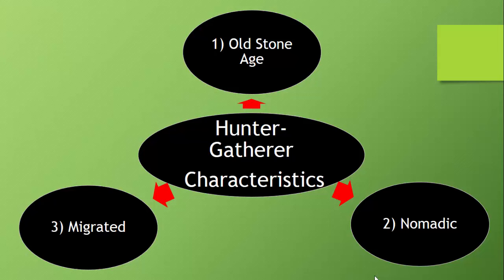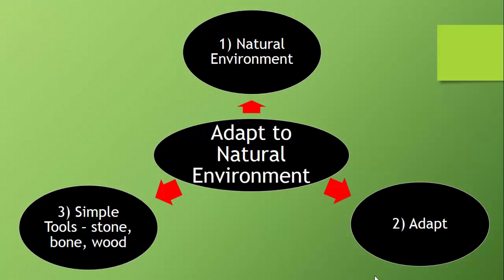So how did hunter-gatherers — since they didn't have a lot of knowledge — how did they adapt to their natural environment? Well, we know the natural environment is our climate, our weather, and our natural resources where we live, and that affects our survival.